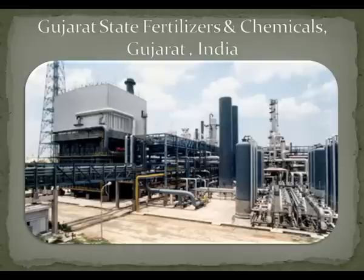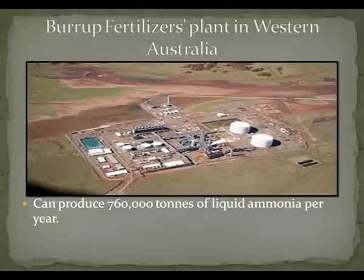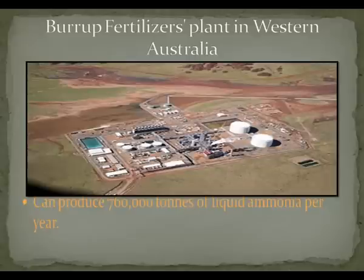As you can see in this slide, this is Gujarat State Fertilizers and Chemicals located in Gujarat, India. And in this slide, you are seeing Burrup Fertilizers plant located in Australia, which can produce 760,000 tons of liquid ammonia per year.